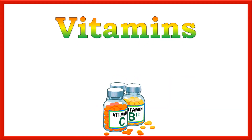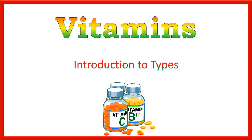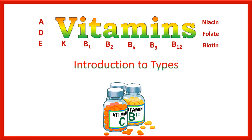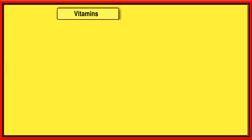Vitamins are simple organic compounds which are usually not synthesized in our body and are taken with the diet. There are different types of vitamins like A, D, E, K, B1, B2, B6, B9, B12, biotin, folate, and some other types as well. In this short tutorial, we shall discuss only the types, their chemical names, and the categories of vitamins.